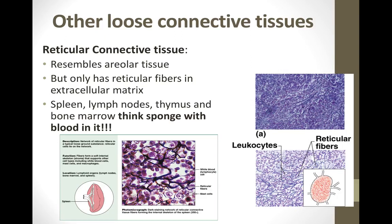The last type of loose connective tissue is reticular connective tissue, which is very spongy and has a lot of empty space. Important locations for this tissue include the spleen, lymph nodes, thymus, and bone marrow. These tissues are very active and present in high percentages throughout your lymphatic system.